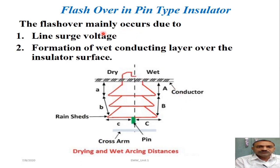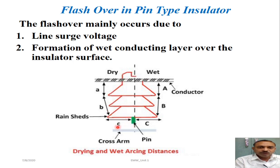Flashover can occur because of two reasons. One is the line surge voltage, and another is the formation of a wet conducting layer over the insulator surface. If a fault takes place somewhere in the power system network, a surge voltage may develop and flow through the conductor, causing the electric stress from the conductor to the pin or cross arm to increase sufficiently to produce a flashover.